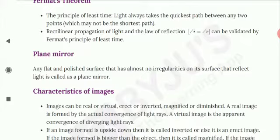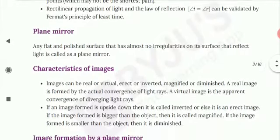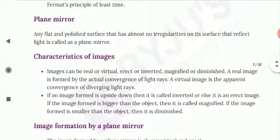Next is the plane mirror. Any flat and polished surface that has almost no irregularities on its surface and reflects light is called a plane mirror. You have seen plane mirrors at your house and in offices.